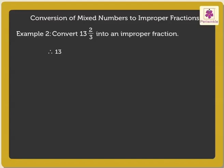So, 13 and 2 third is equal to 13 into 3 in brackets plus 2 upon 3, which is equal to 39 plus 2 upon 3.